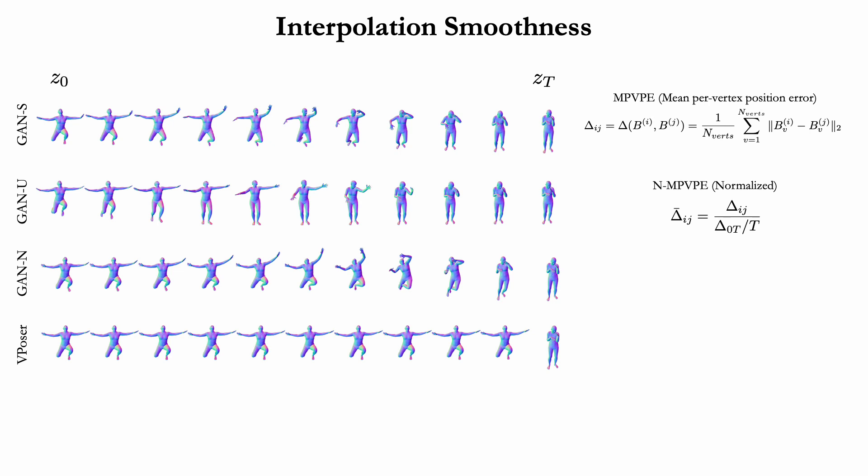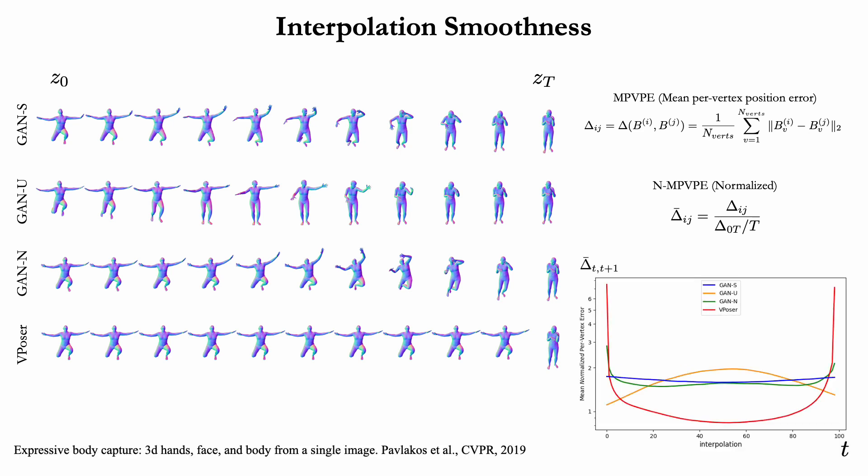The fixed topology of SMPL meshes lets us quantify how smooth the interpolation is. To this end, we compute step-by-step mean per-vertex error and normalize it according to the expected average step. Hence, the error line computed along the path should be flat for a perfectly smooth interpolation, which it almost is when using a spherical prior distribution, as depicted by the blue curve. In contrast, the red curve describes the V-poser behavior with very abrupt transitions.